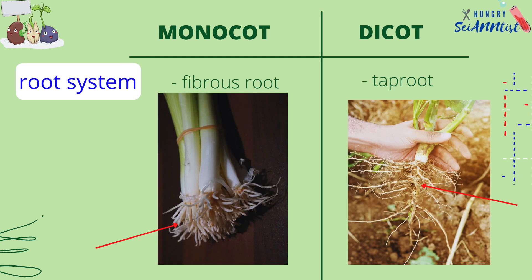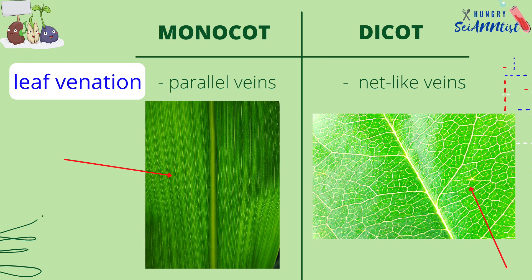Monocot has fibrous root, while dicot has tap root. A monocot leaf has parallel veins, while a dicot leaf has net-like veins.